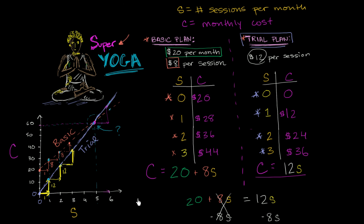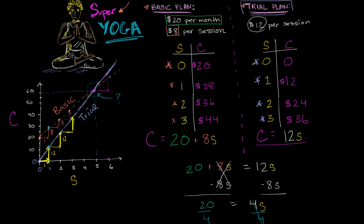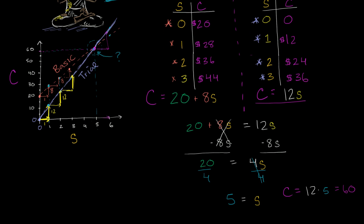While I was doing my tidy little bit of analysis to figure out whether the basic or the trial plan made sense, we did this whole analysis of saying at what number of sessions does the trial plan give me the same cost as the basic plan? I did this whole calculation and said it's at five sessions. I didn't realize it, but the guy at the front desk of the yoga studio was watching me the whole time.